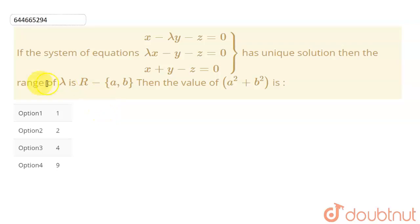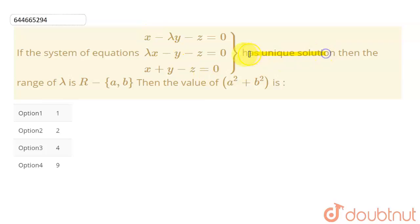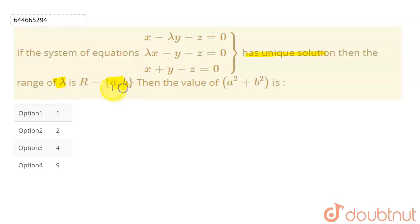So students, in this question we have given a system of equations. We have given these three equations, which has a unique solution. The range of lambda is coming to be R minus two terms, a and b.